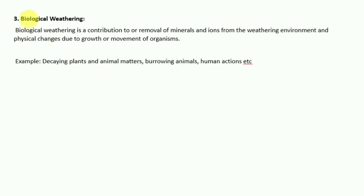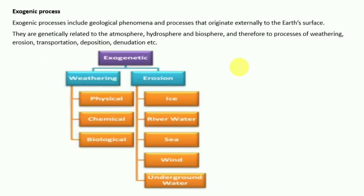The third type of weathering is biological weathering — contributions to or removal of minerals and ions from the weathering environment, and physical change due to growth or movement of organisms. Examples include decaying plant and animal matter, burrowing animals, and human action.